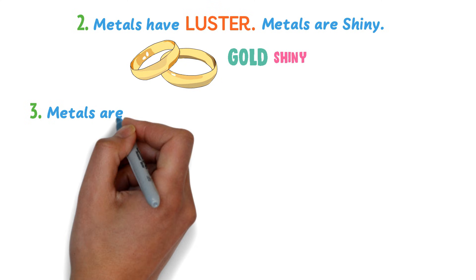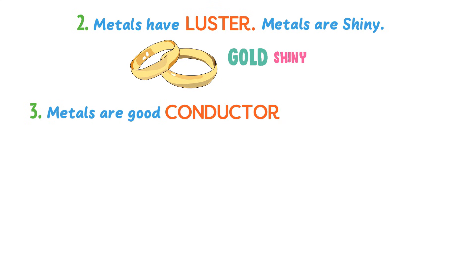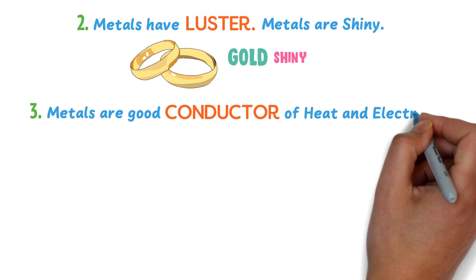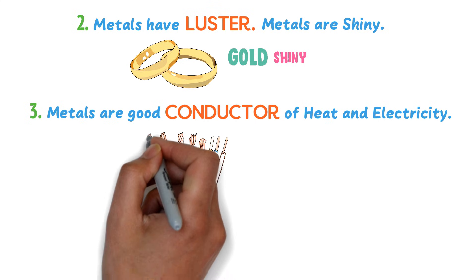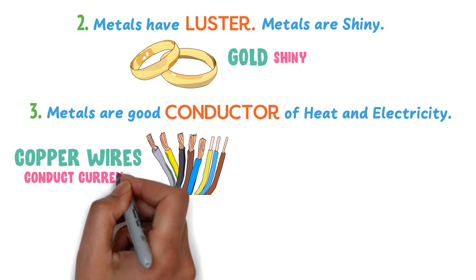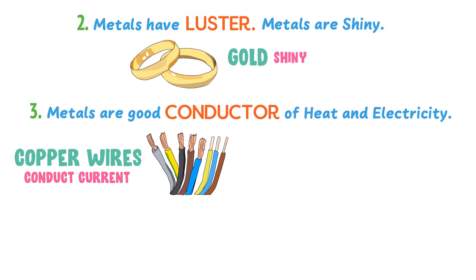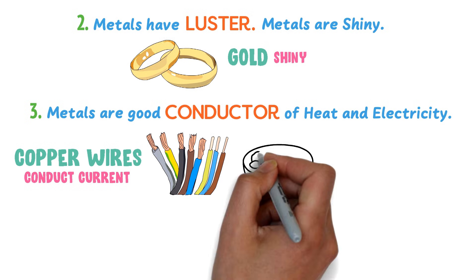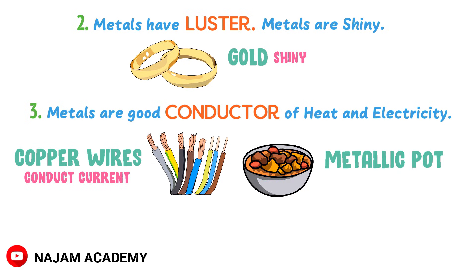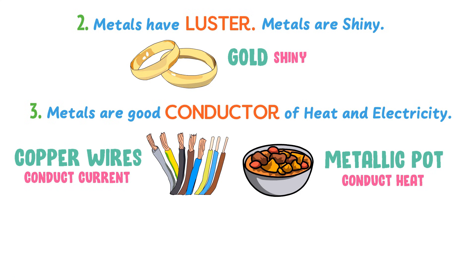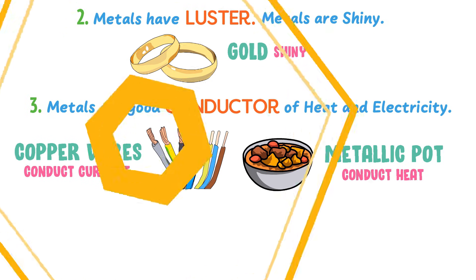Thirdly, metals are good conductors of heat and electricity. For example, copper wires are good conductors of current and we use them in our daily life. We also use metallic pots for cooking because they are good conductors of heat.